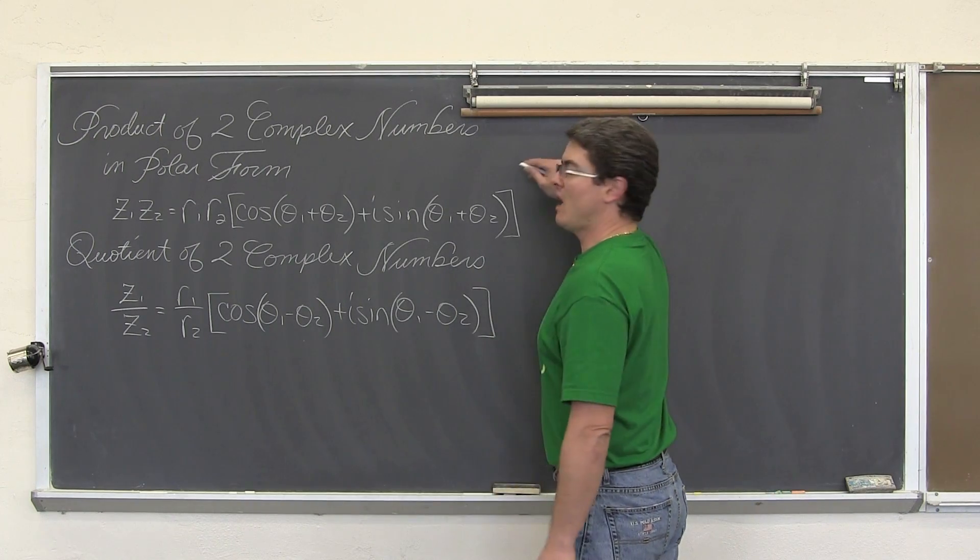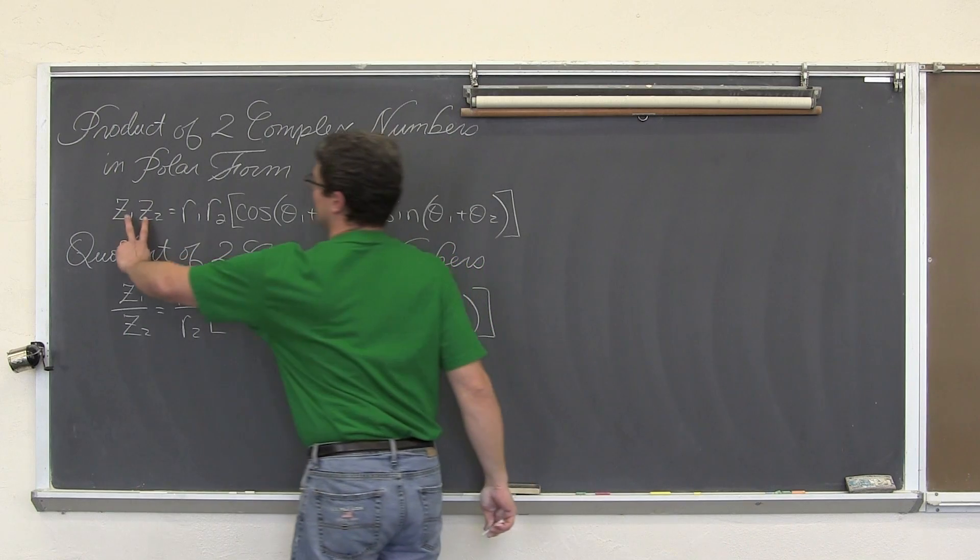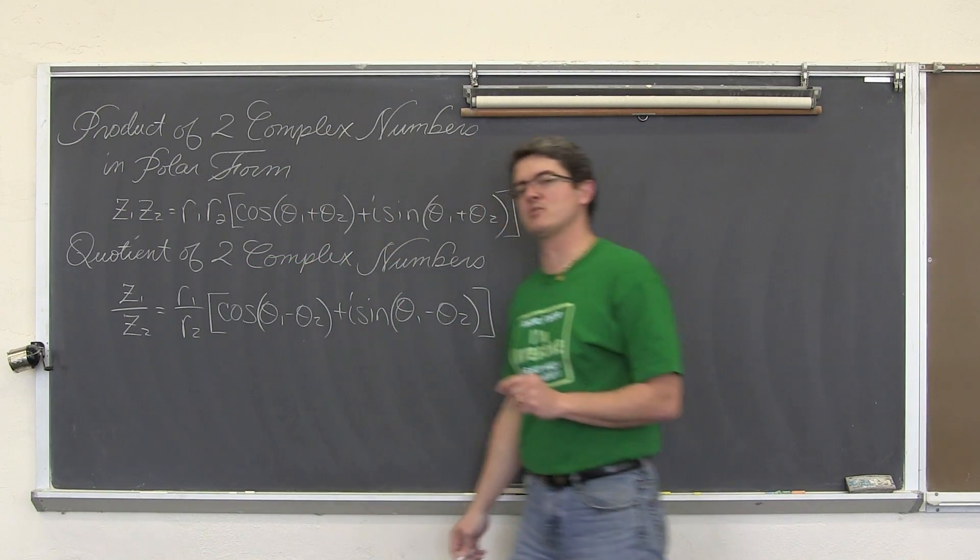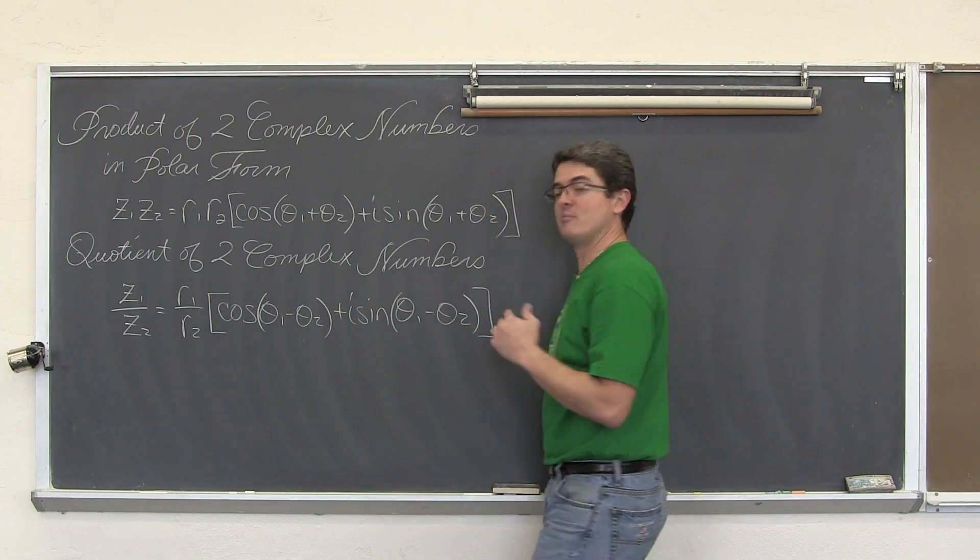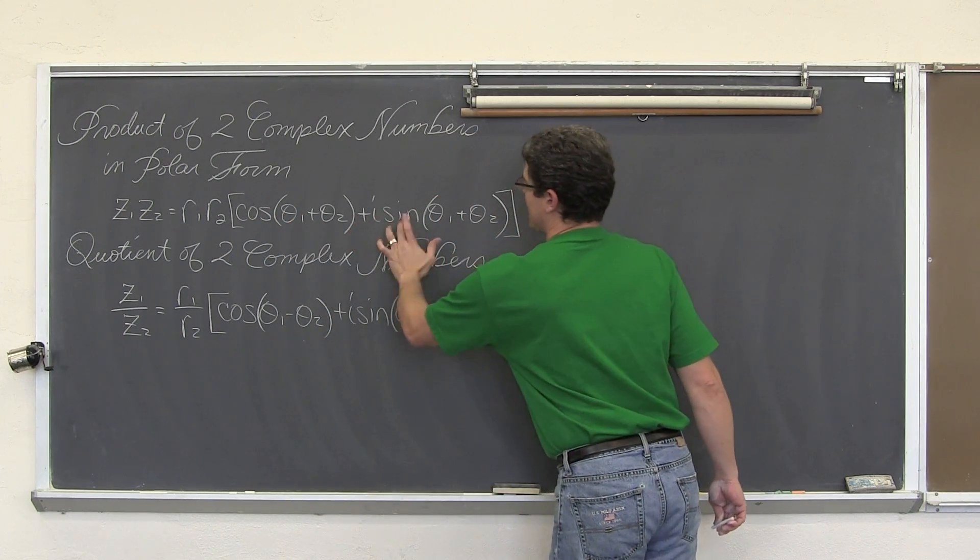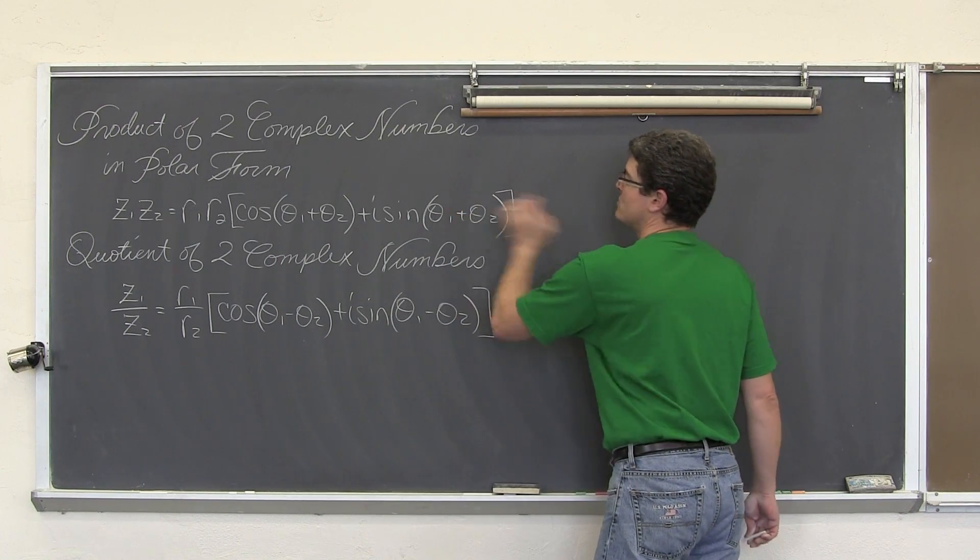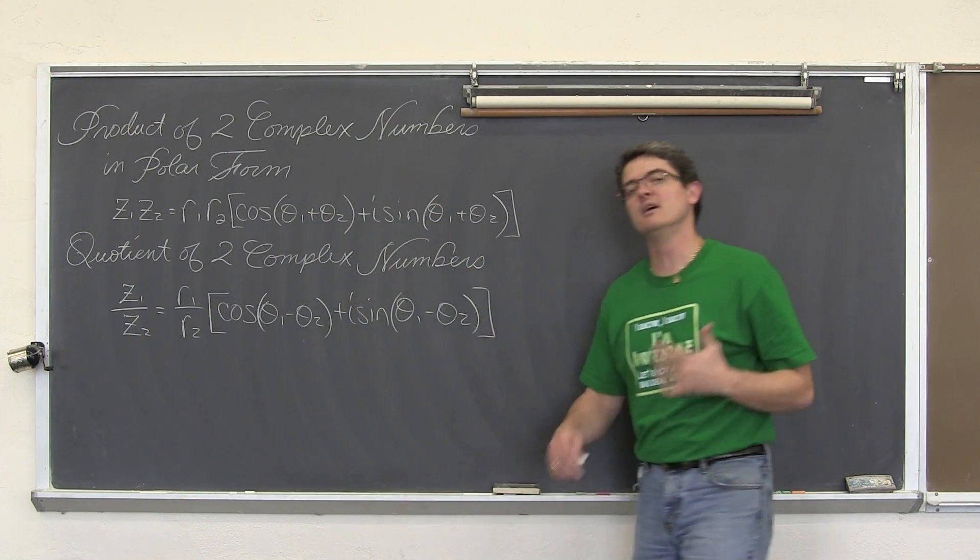I want to do the product first. To multiply two complex numbers in polar form, all you need to do is multiply the two radiuses together and then multiply that by the cosine of the two angles being added plus i times the sine of the two angles being added. These are the same angles, so they will of course be the same answer.